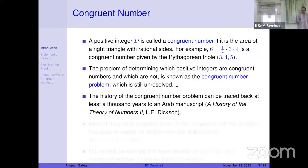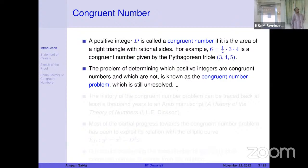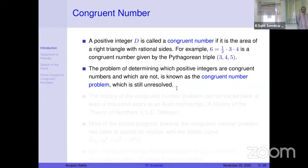The problem of determining which positive integers are congruent numbers and which are not is known as the congruent number problem, and it is still unresolved — one of the oldest open problems. For example, Fibonacci showed that seven is a congruent number and conjectured that one is not. Fermat used the method of infinite descent to show that one, and more generally any square integer, is not a congruent number, due to the scaling factor.